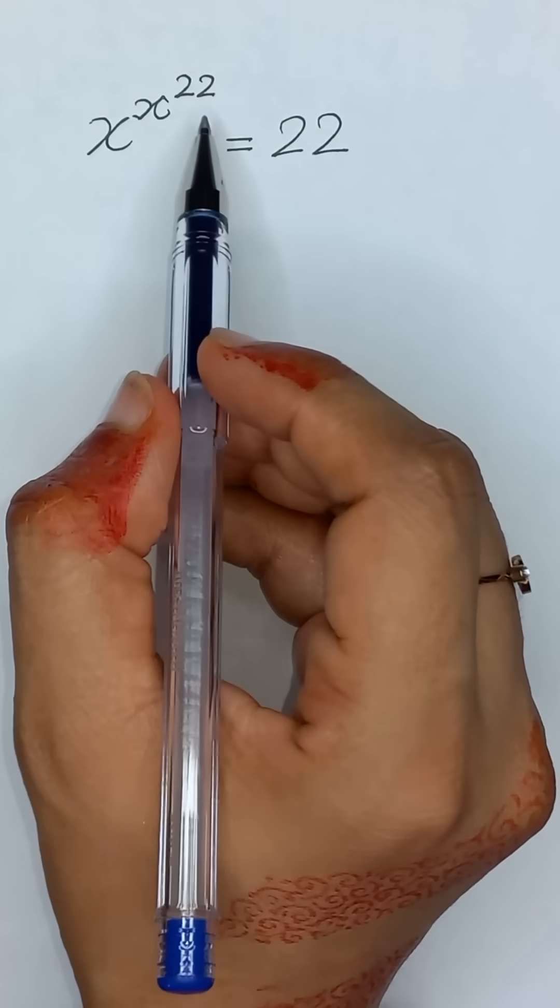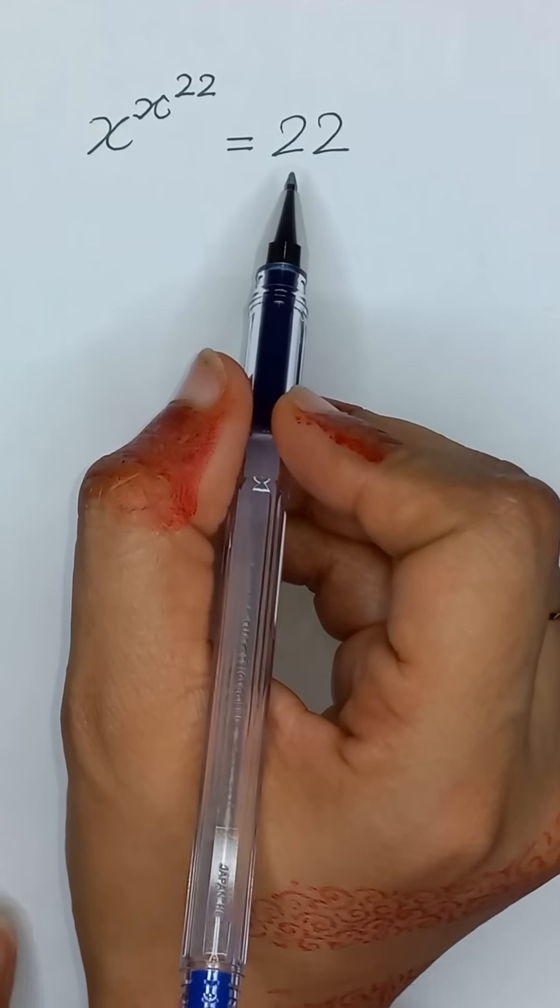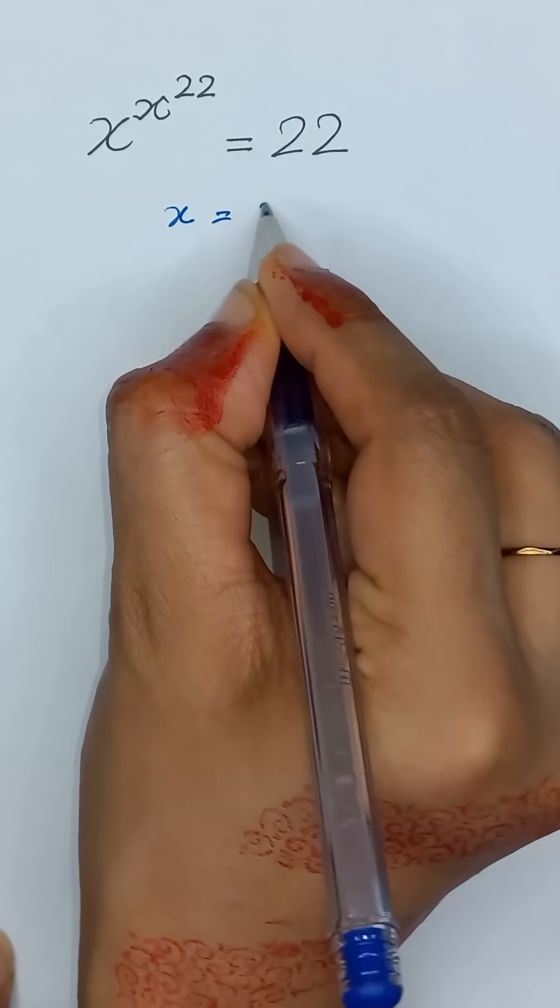x to the power x to the power 22 is equal to 22 and we will solve for x.